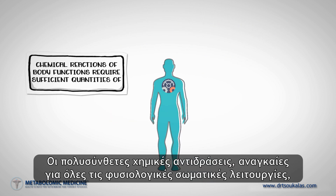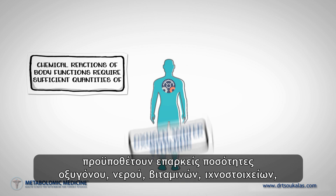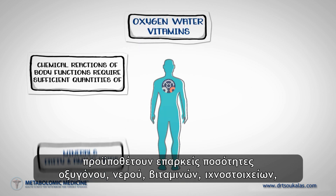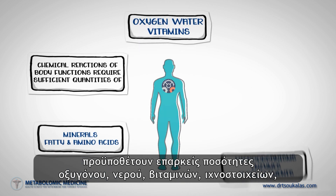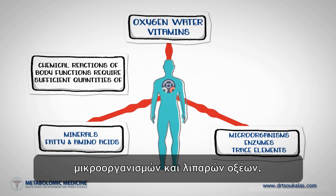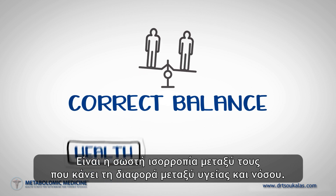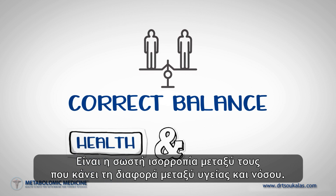The complex chemical reactions necessary for all normal bodily functions require sufficient quantities of oxygen, water, vitamins, trace elements, minerals, amino acids, enzymes, microorganisms, and fatty acids. It's the correct balance between them that makes all the difference between health and disease.